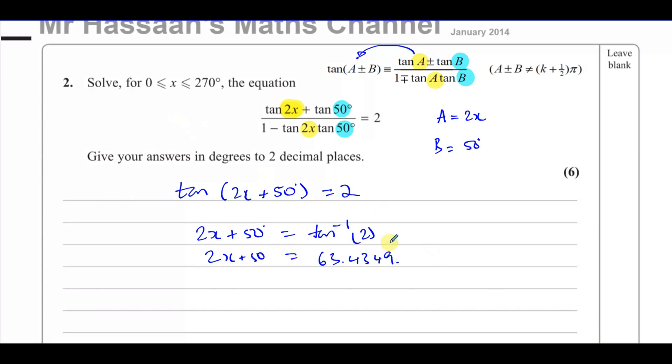So we have to first of all also we have to try to rewrite our limit so that it matches this. So our limits start off as 0, which is less than or equal to x, less than or equal to 270. But our middle, the angle here has become 2x plus 50.